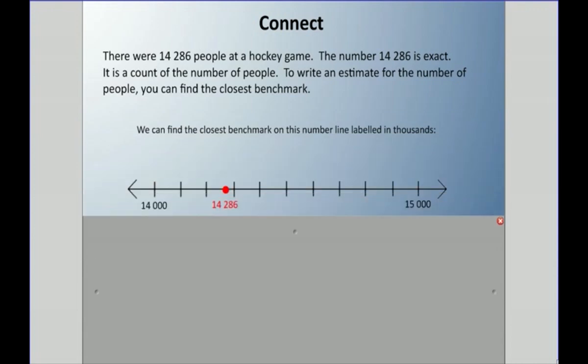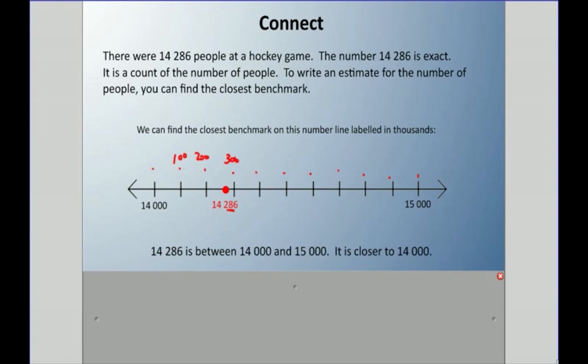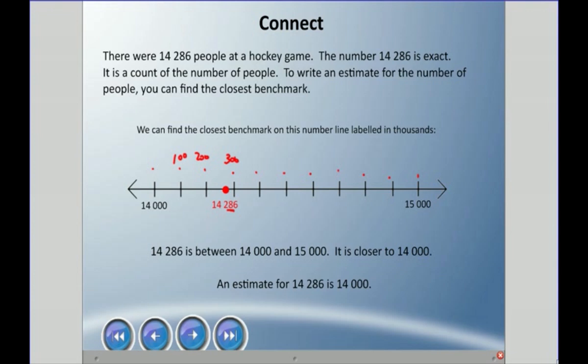We can use a number line that's labeled in the thousands. You can see here, I start with 14,000 on the left, I have 15,000 on the right. If we count how many lines are here, there's 10. That means each one of these lines is 100, and there's 10 hundreds in 1,000. So that number 14,286, I'm going to put it. If this is the 100 line, this is the 200 line, 86 means it's probably closer than the 300. So I'm going to put my red dot somewhere about there. We know that it's closer to 14,000 because visually we can see it on the number line. So we could say an estimate for 14,286 is 14,000.